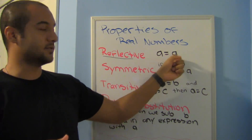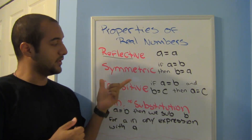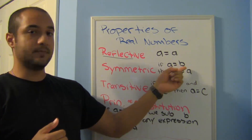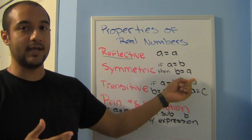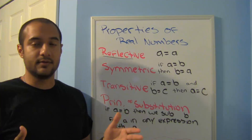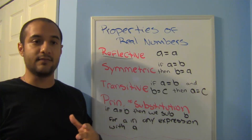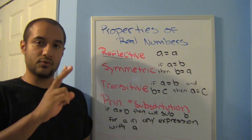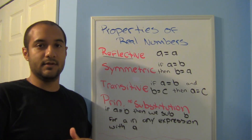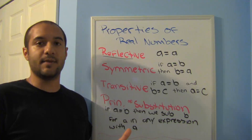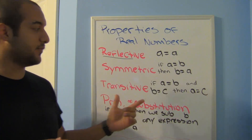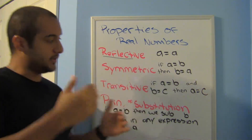The symmetric property says that if a is equal to b, then b is equal to a. For example, you know that two plus three is equal to five — you can also say that five is equal to two plus three. Notice how I switched and it means the same thing. You can also look at it like two times five is the same as five times two; it's going to give the same answer.